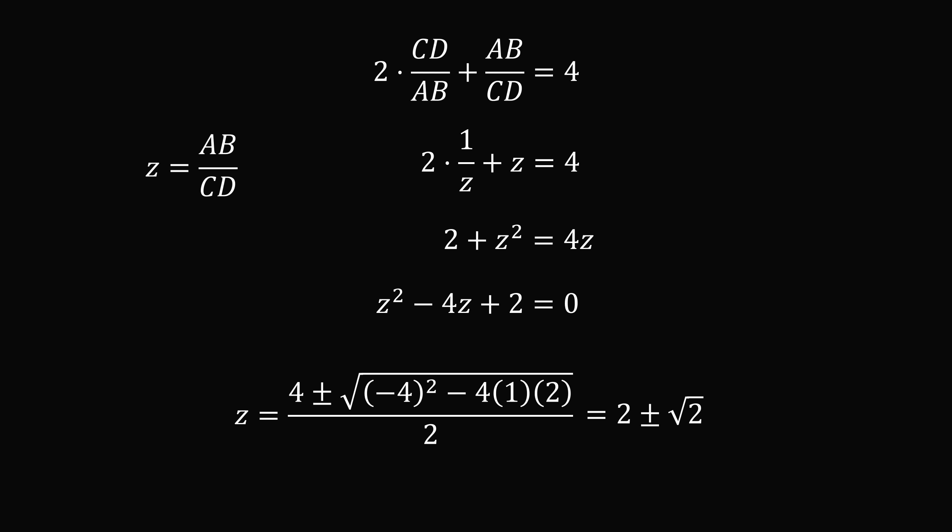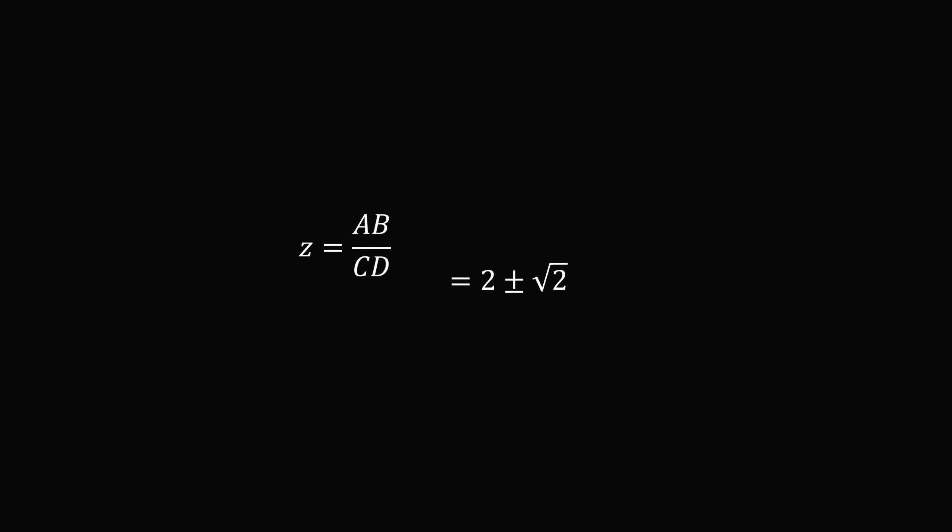So which one is it? We have AB over CD is either 2 plus the square root of 2 or 2 minus the square root of 2. We were given that AB is greater than CD so we must take the plus value so that the ratio is greater than 1.